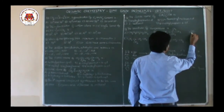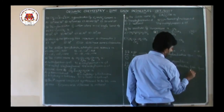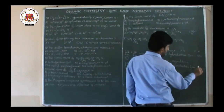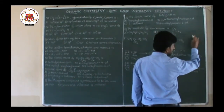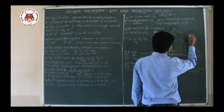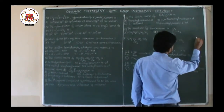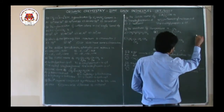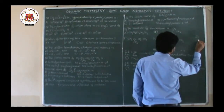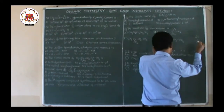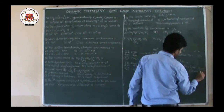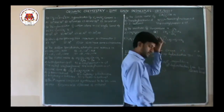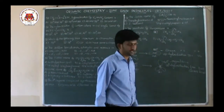So the percentage of S in SP2 hybridization will be around 33.33%, and the percentage of P will be around 66.67%. So that is the percentage of S and P for SP2 hybridization.